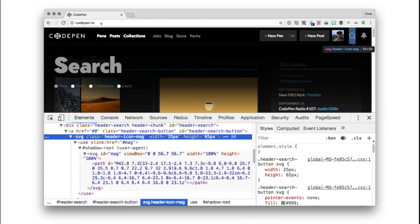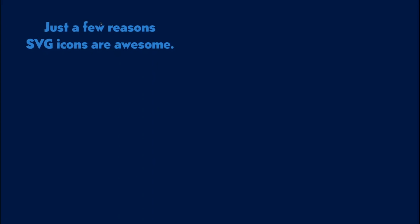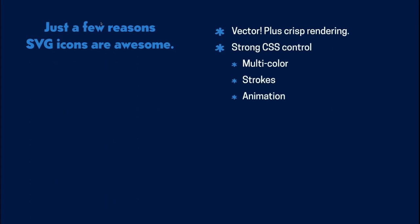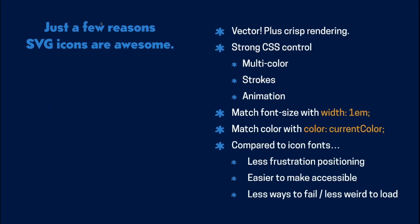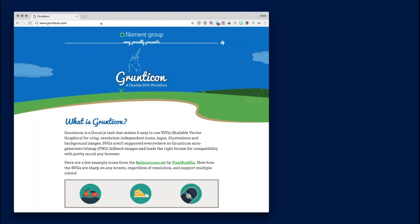Here's that in use on CodePen — I use an icon system like this. Why do it this way instead of any other method? They're vectors, so you can show them at any size, super crisp. You have strong CSS control — style one icon differently from another even if they're the same shape, make them multicolor, control the stroke in interesting ways, animate them, and use JavaScript on them. You can make them match the surrounding font size and color easily, just like icon fonts. Compared to icon fonts, SVG icons don't fail as weirdly, are easier to make accessible, and easier to position. I have a blog post called 'Icon Fonts vs. SVG Cage Match' with many more reasons — SVG icons really have the edge.